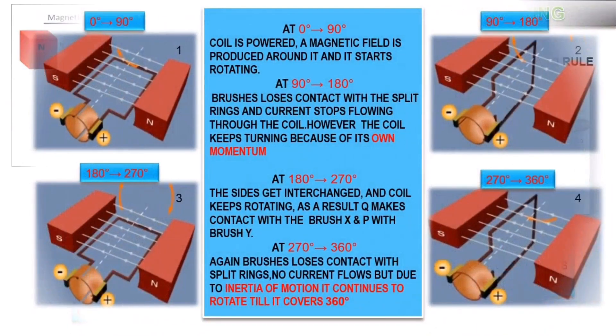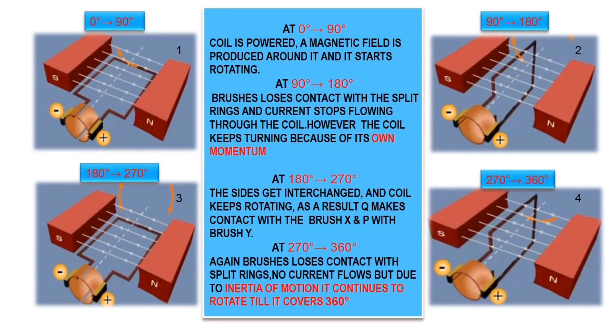Here you can see the rotation of the coil step by step. From 0 degrees to 90 degrees, 90 degrees to 180 degrees, 180 degrees to 270 degrees, and 270 degrees to 360 degrees. In the first diagram, from 0 to 90 degrees, the coil is powered, a magnetic field is produced around it, and it starts rotating. At 90 to 180 degrees, the brushes lose contact with the split rings and the current stops flowing through the coil. However, the coil keeps turning because of its own momentum. The split ends of the split rings are near to the brushes, so the brushes stop contact with the rings.